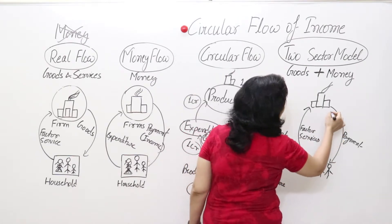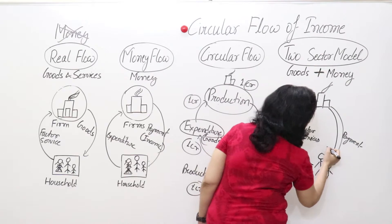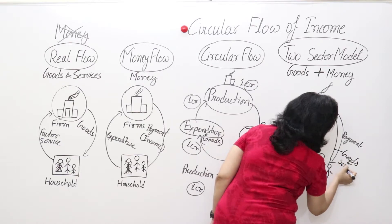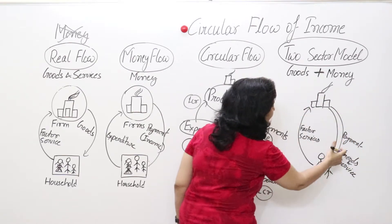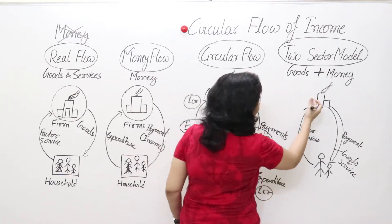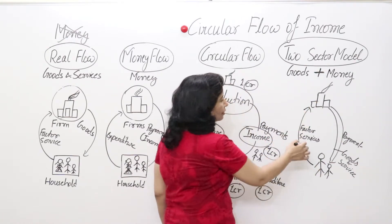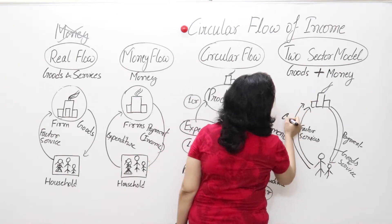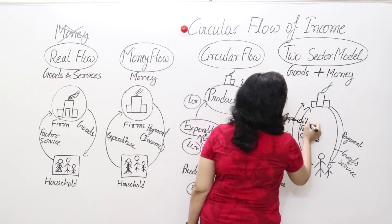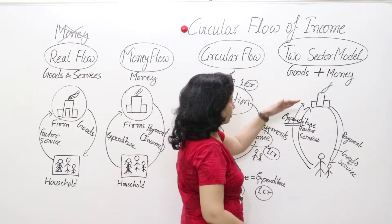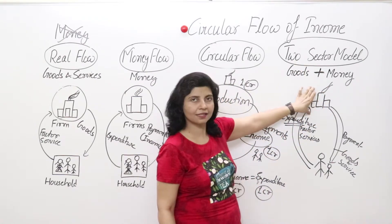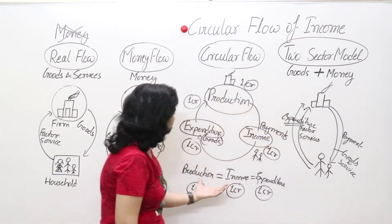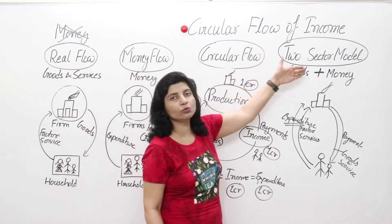And what do households give to firms? They give expenditure. For example, if a firm produces biscuits, we will spend our income on their biscuits. Whatever income we get, we spend on goods from these firms. We have the same triple identity here. So this is the two sector model.